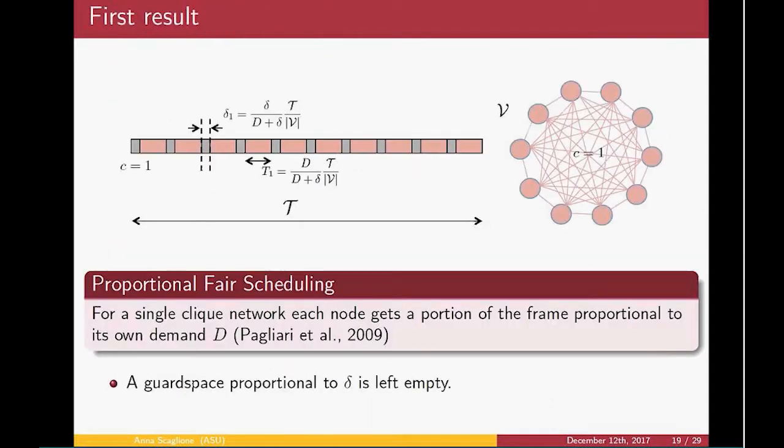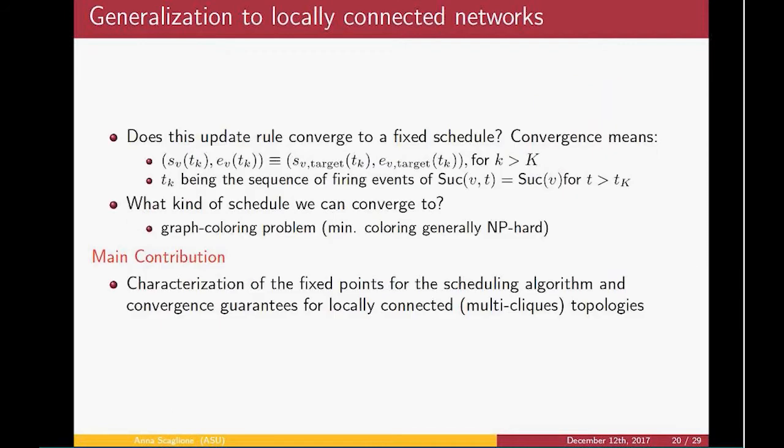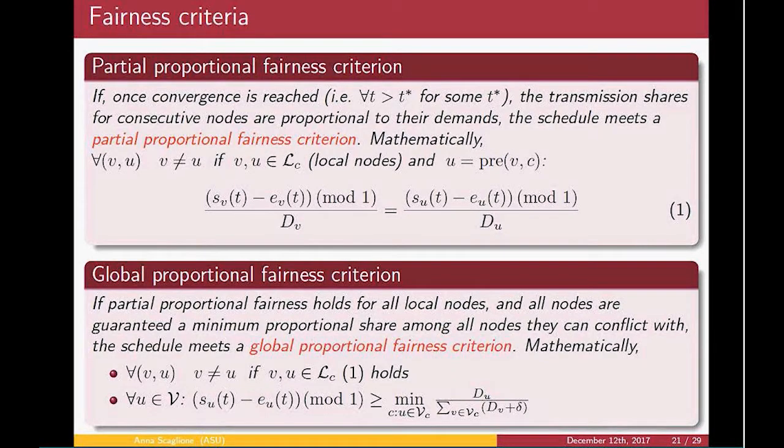Let me jump directly to the key results that were proven. If you update these dynamics on a fully connected network, what you can achieve is essentially a TDMA schedule or a proportional schedule, depending on how you set up the parameters of this update to more aggressively or less aggressively move closer to the start and end clock of the neighbors. The main result for locally connected networks is that in general all the fixed points maintain a proportional fairness criterion—you are given a proportion of the network which is basically controlled by this demand parameter. But there are situations in particular topologies in which there is a unique fixed point where you actually get a proportional schedule that corresponds to the schedule you will get in the most congested subnetwork, which is fully connected.